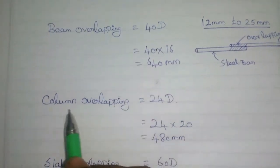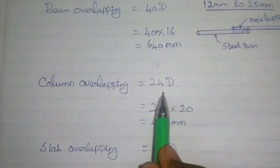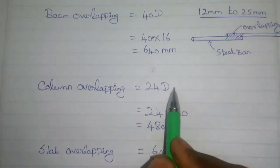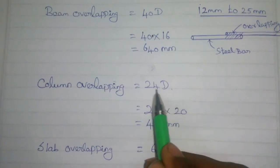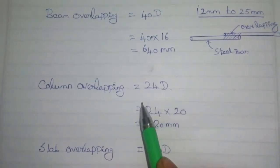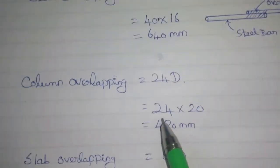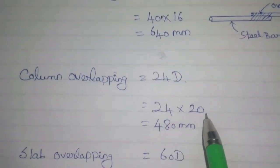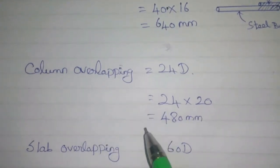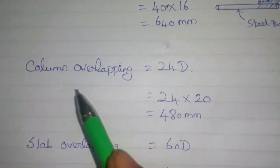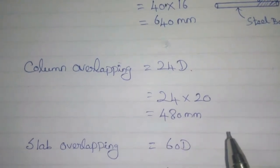Column overlapping uses the formula 24d, where d is the diameter of the bar. We will use a column bar of 20mm diameter. So 24 x 20mm gives 480mm. The column overlapping length is 480mm.